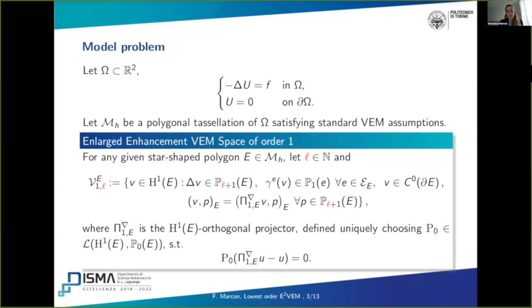This is the local space for any given star-shaped polygon E. We define a parameter L that is a natural number. We enlarge the polynomial space, and this space is similar to the standard virtual element one. However, we enlarge the polynomial space in order to compute some higher order projectors. The functions are H1 functions whose Laplacian is on this polynomial enlarged space. On the boundary, these are the standard VEM virtual element functions. And then they have to satisfy this enlarged enhancement property. Here we denoted by PI_NABLA the H1 orthogonal projector. Notice that we can choose as the degrees of freedom of the space the values of the functions at the vertices of the polygon E. That is the same choice as in the standard virtual element method.